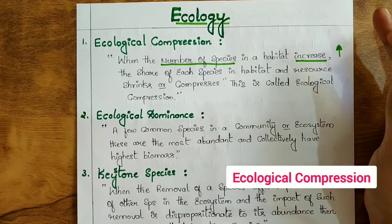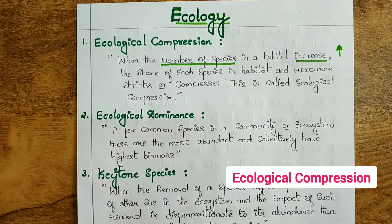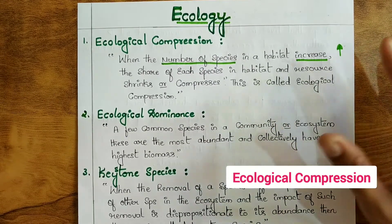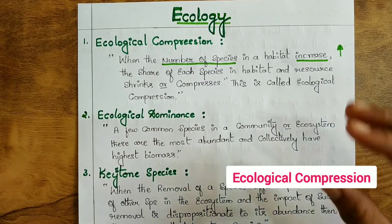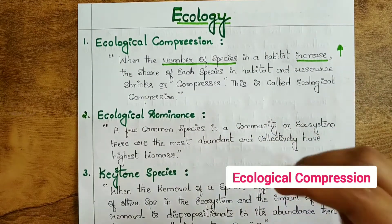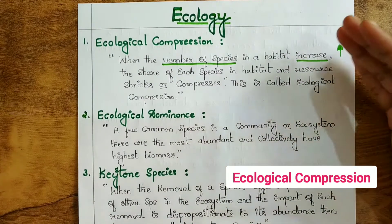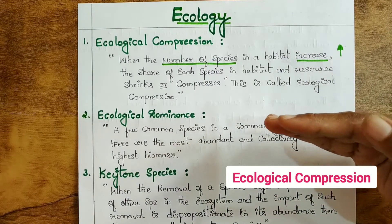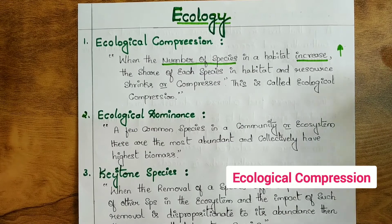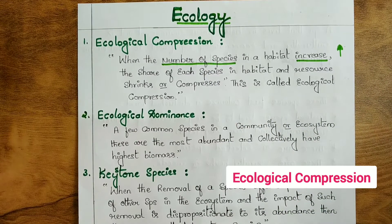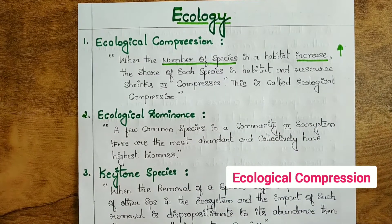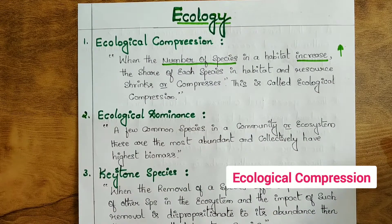Let me give a better example. Imagine you have five family members and your mom prepared ten jamun sweets — that's two per person, which is enough. But now five more relatives arrive. You have to share the same jamun, so your intake goes from two down to one. Your resources have shrunk — that is exactly what ecological compression means.